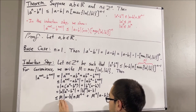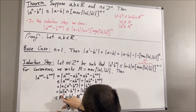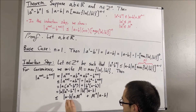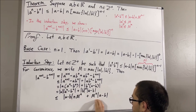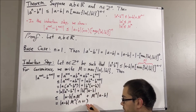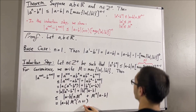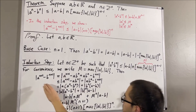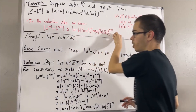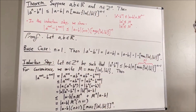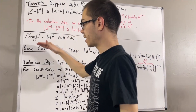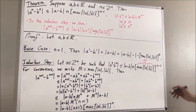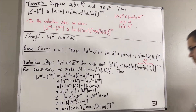From here, we see that M times M to the n minus 1 leaves us with M to the power of n. We can factor out absolute value of a minus b times M to the n from both terms, and this is precisely equal to what we wanted to show. So we've shown that the left-hand side is less than or equal to the right-hand side, which completes the induction step. We've completed both the base case and the induction step, so this closes the induction. We've shown for all positive integers n this inequality is true, and this completes the proof.